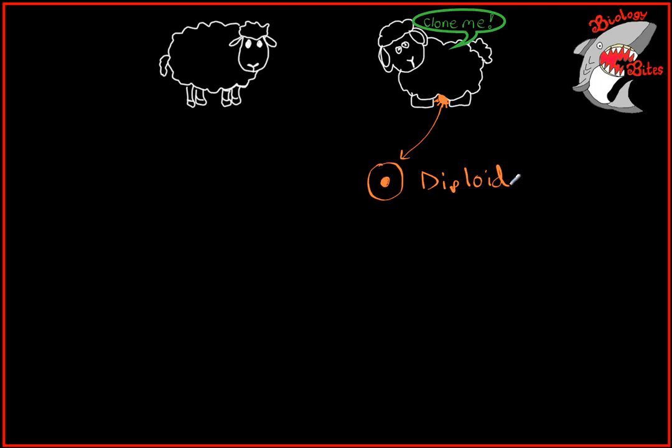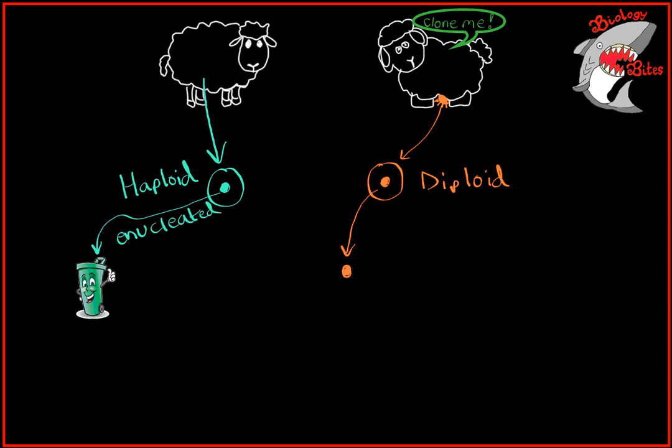They needed to remove this DNA by micropipette, so you literally suck out the nucleus. We also need to collect a gamete from a female sheep, so this will be an egg cell. However, the nucleus here contains half the genetic material to make a complete organism, so this is known as haploid. It's no good to make a complete organism, so this has to be removed, which is known as enucleated.